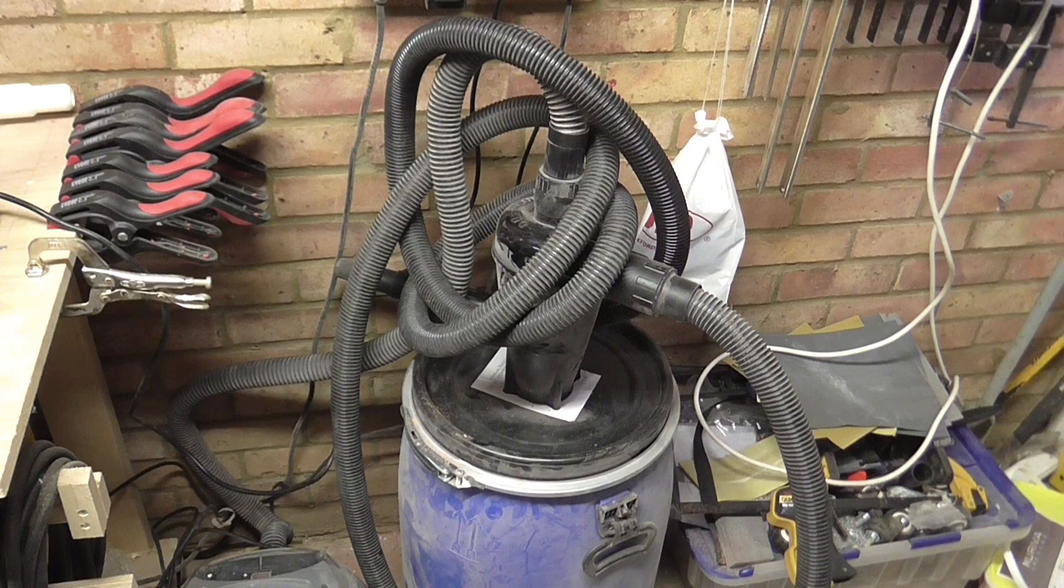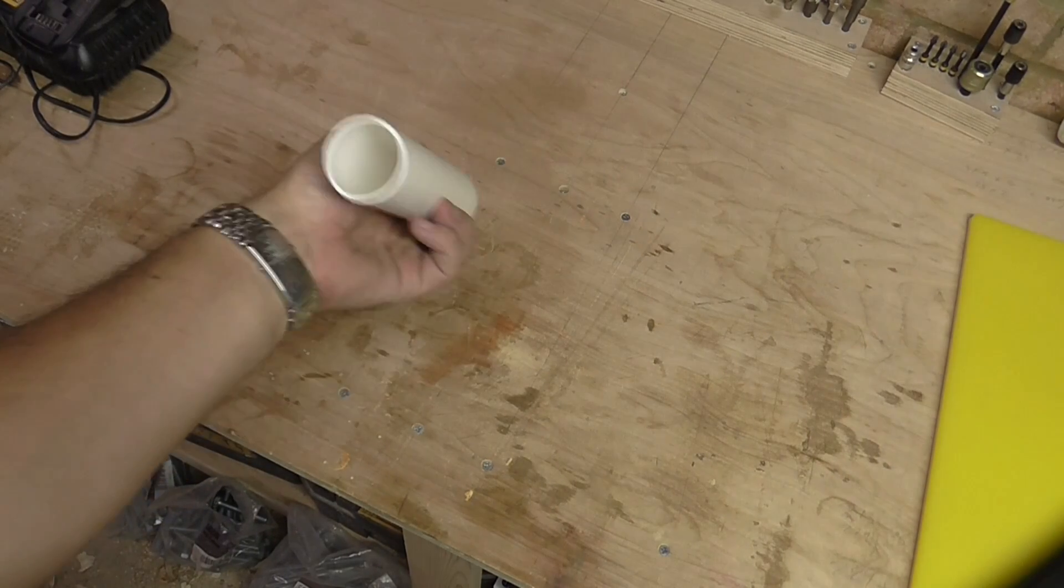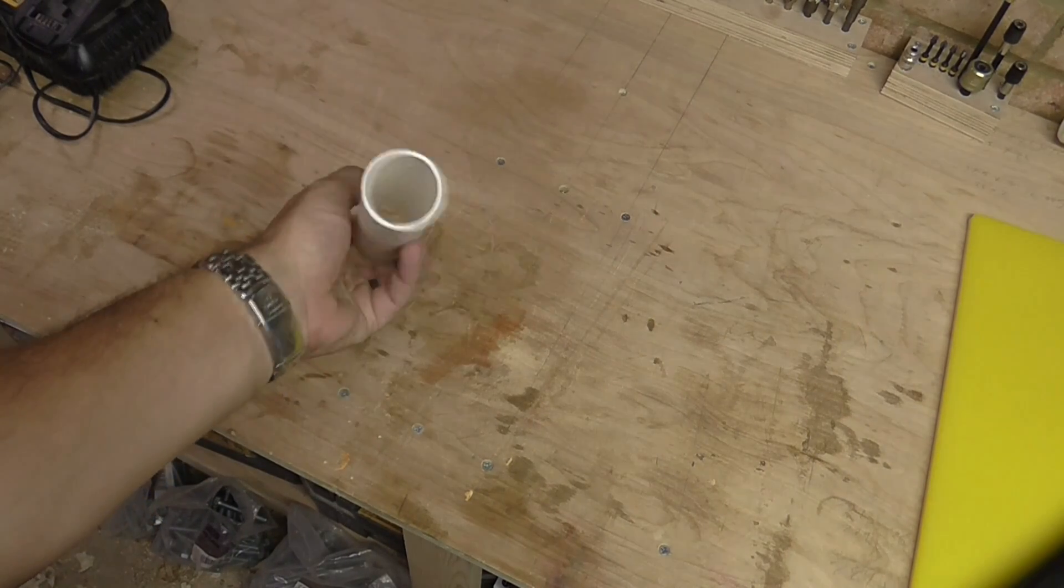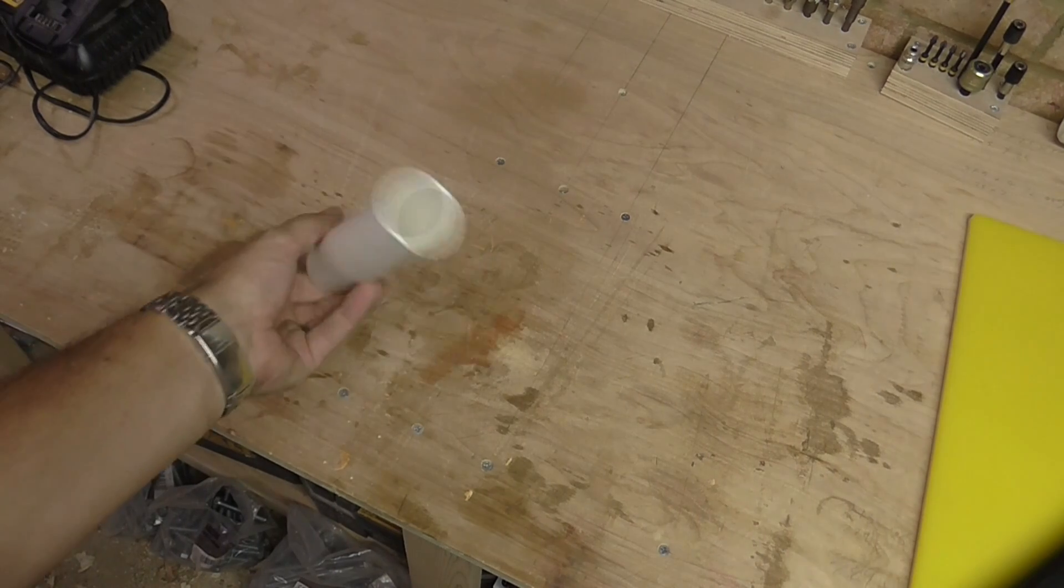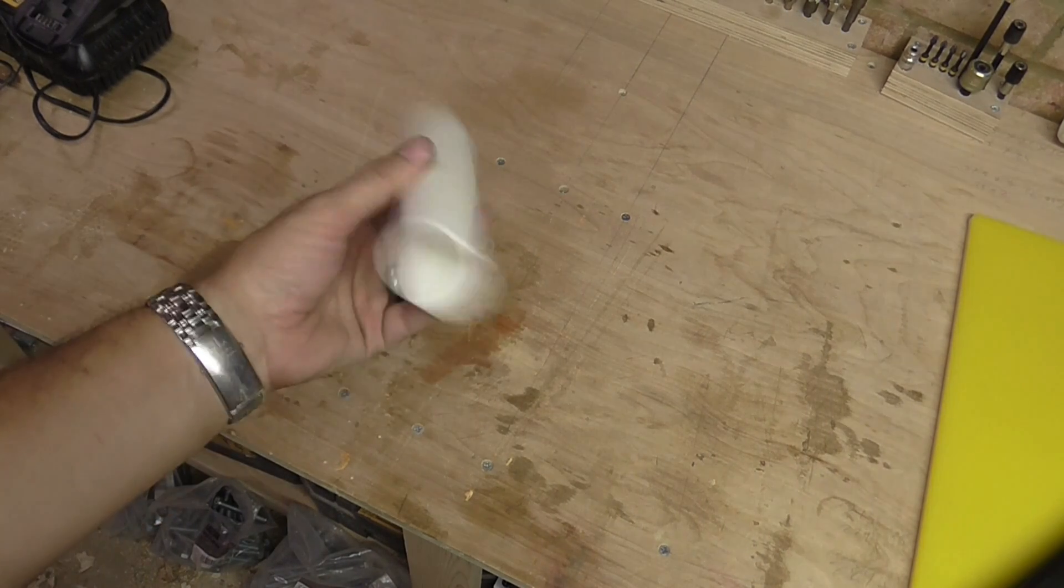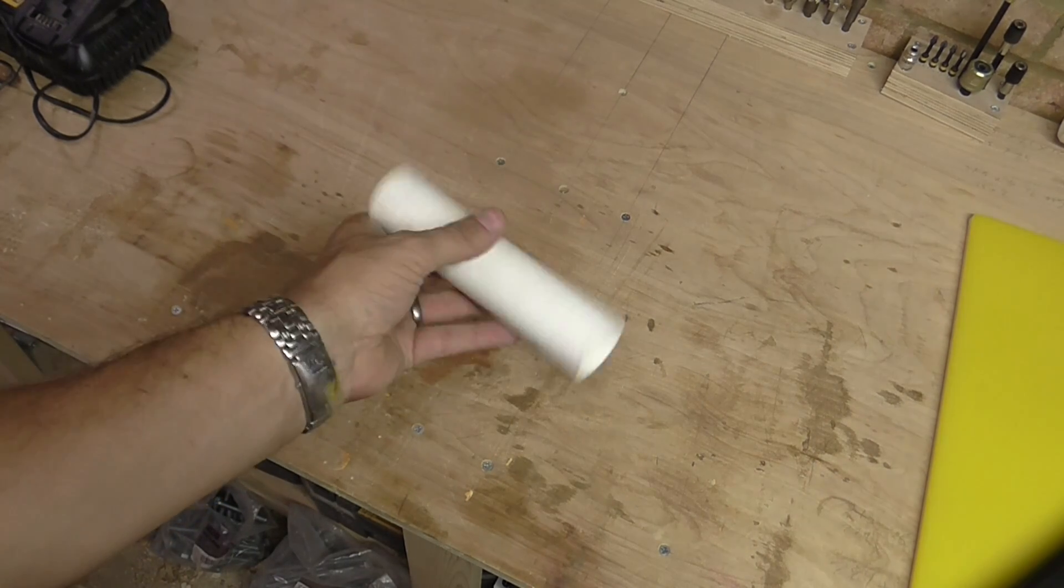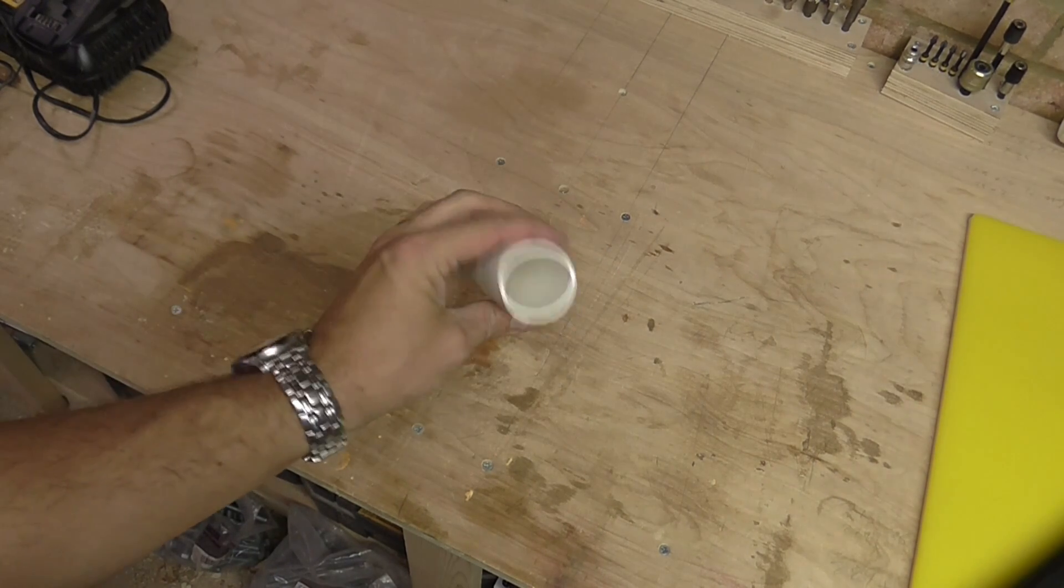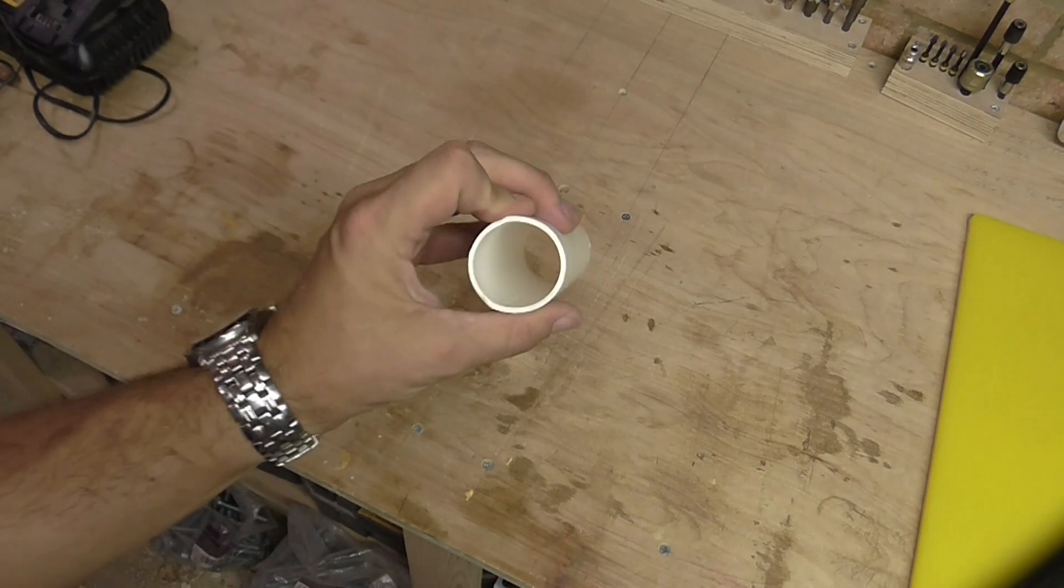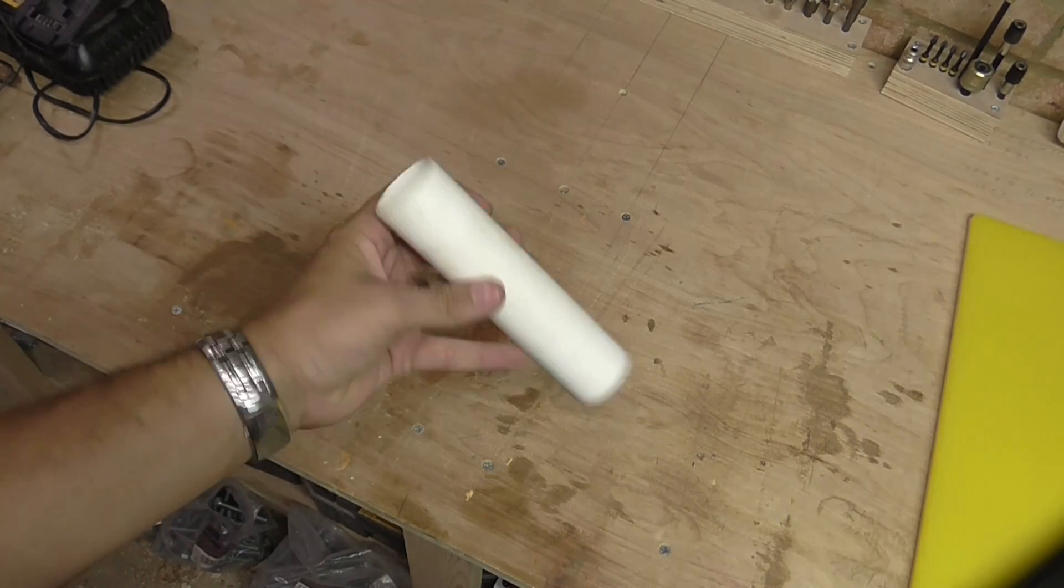The foundation for my dust extraction system is going to be this 40mm waste pipe. It's quite cheap over here in the UK and I'm using what's called push fit so I can just push it on to the different connectors and I don't need any solvent or compression fixings to fix it together.